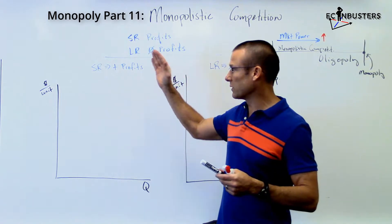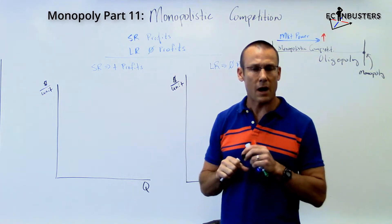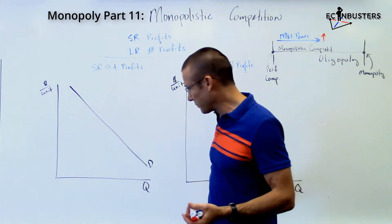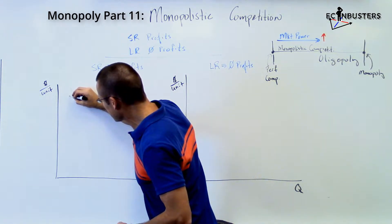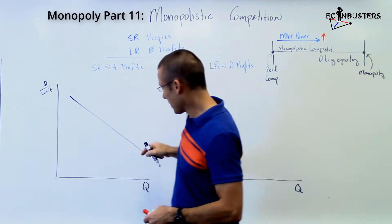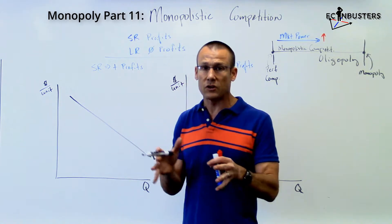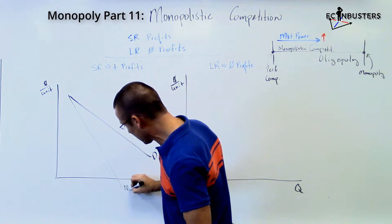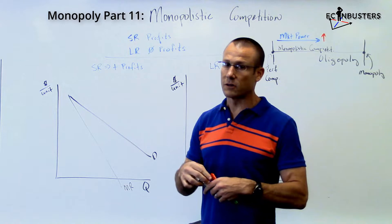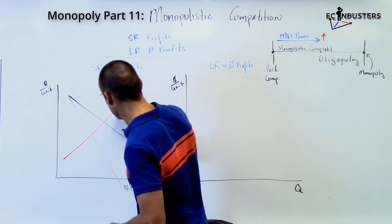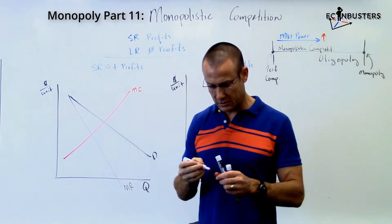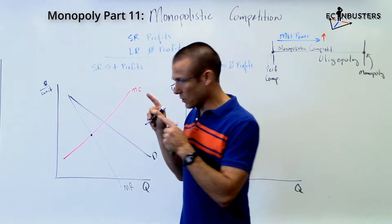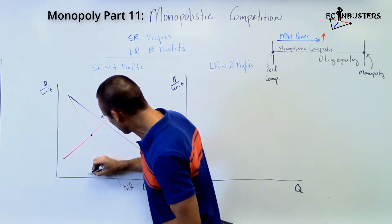The next big difference is between the short run and the long run. Let's draw the monopolistic competition graph. I'll draw a demand curve — maybe a little bit flatter to emphasize we have some close substitutes. Since demand is downward sloping and we do have product differentiation, this firm is the only one making this particular product. MR is still at twice the slope, and marginal cost is the same as always — eventually upward sloping. The profit-maximizing output is determined by MR equals MC, same as monopoly.